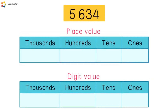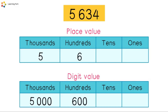Let's look at this number. The place value of five is thousands, and the digit value is five thousand. The place value of six is hundreds, and the digit value is six hundred.